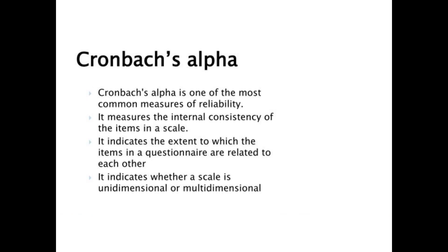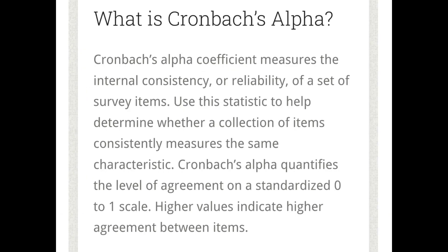Cronbach's Alpha indicates whether the scale or research tool is unidimensional or multidimensional. It is a measure of reliability which measures internal consistency and indicates the relationship between items in a questionnaire — how the items are related to one another, and whether your scale is unidimensional or multidimensional.